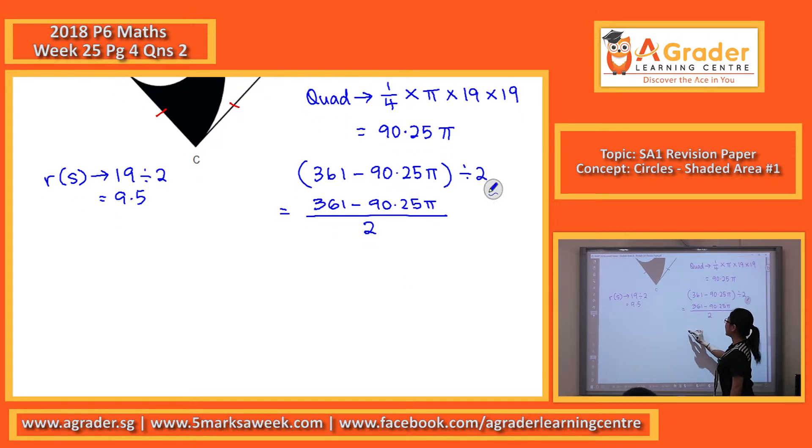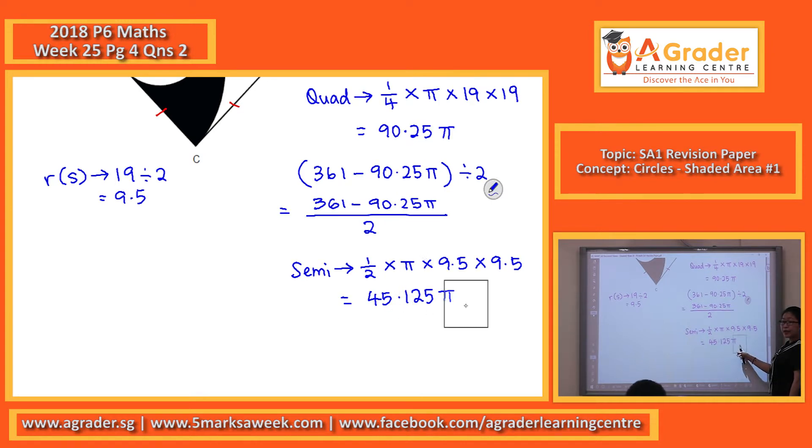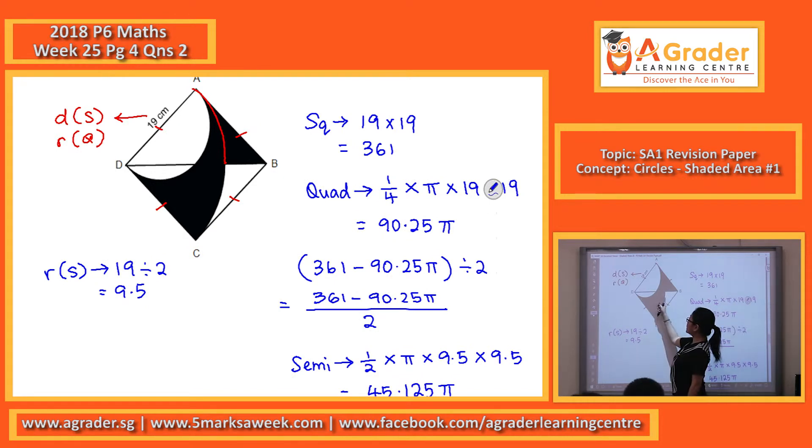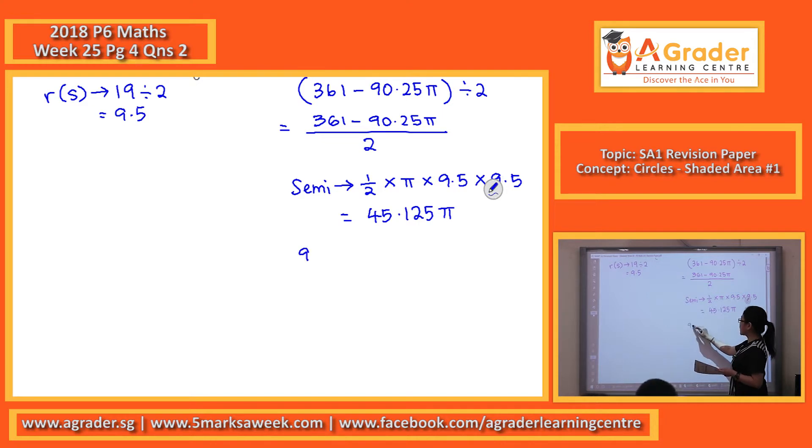So now we're going to find the semi. For the semi, fraction is half, times pi, times the r. Answer for this, 45.125π. Again, just key half times 9.5 times 9.5. You will get the 45.125, then put back the pi. Then it will be the quadrant minus the semicircle. Quadrant as above, 90.25π, minus this 45.125π. You will come back to 45.125π.